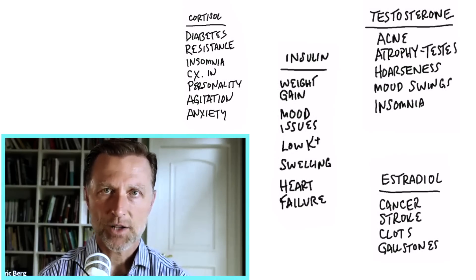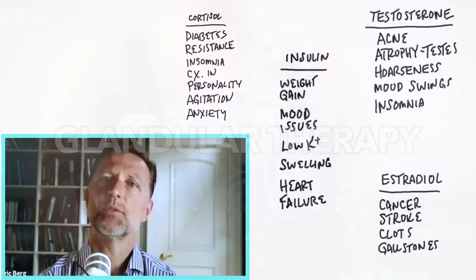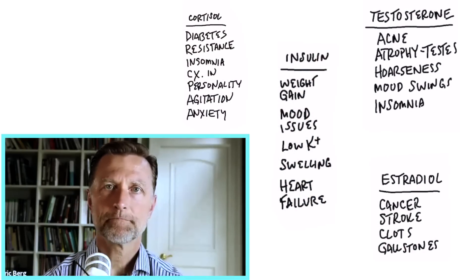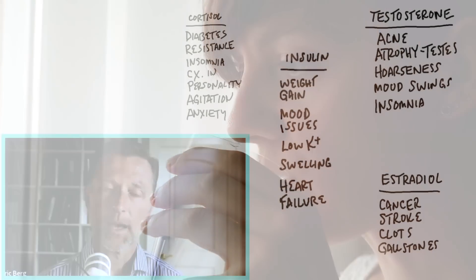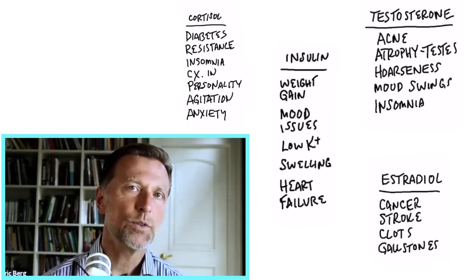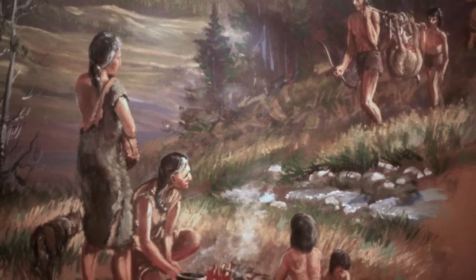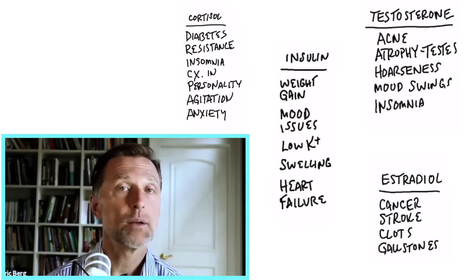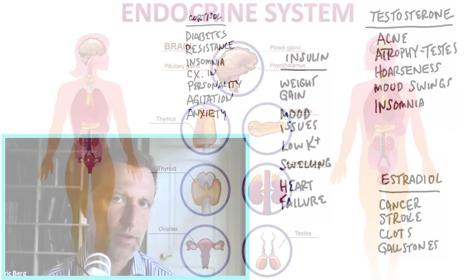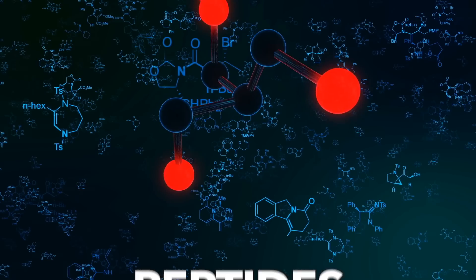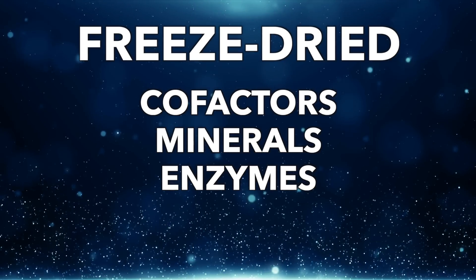A much better strategy I would recommend is using glandular therapy — glandular extracts. What does that do differently than hormonal therapy? You're supporting the entire endocrine system as a whole. When you take a glandular, you're getting a lot of things in that gland: nutrition, growth factors, proteins, amino acids, peptides, cofactors, minerals, and enzymes. You have the whole package, especially if it's freeze-dried. Glands and organ meats are the most nutrient-dense foods you can eat — far more so than muscle meat alone.